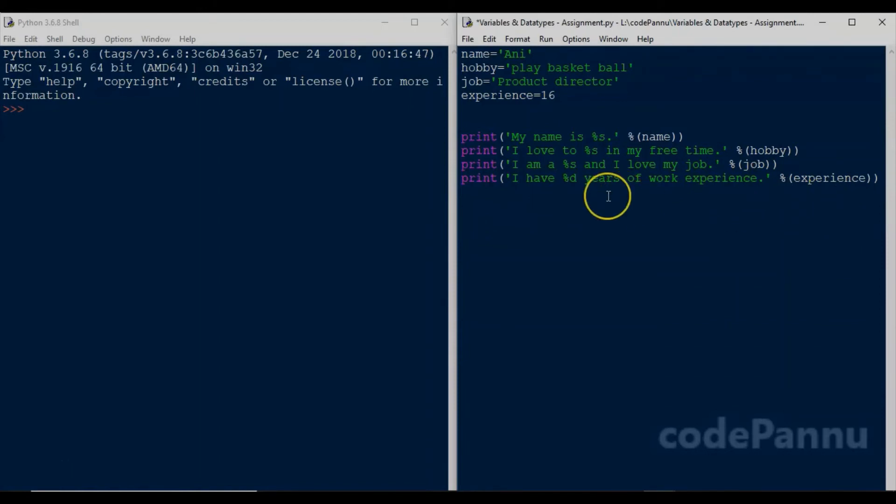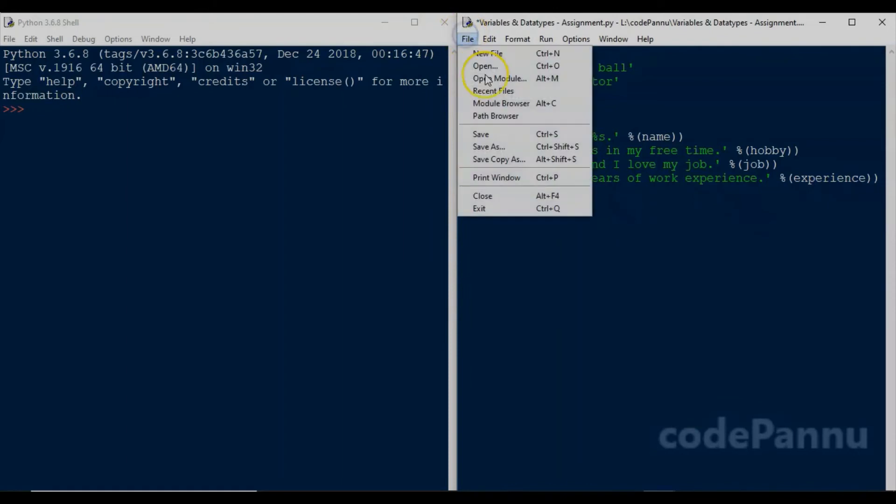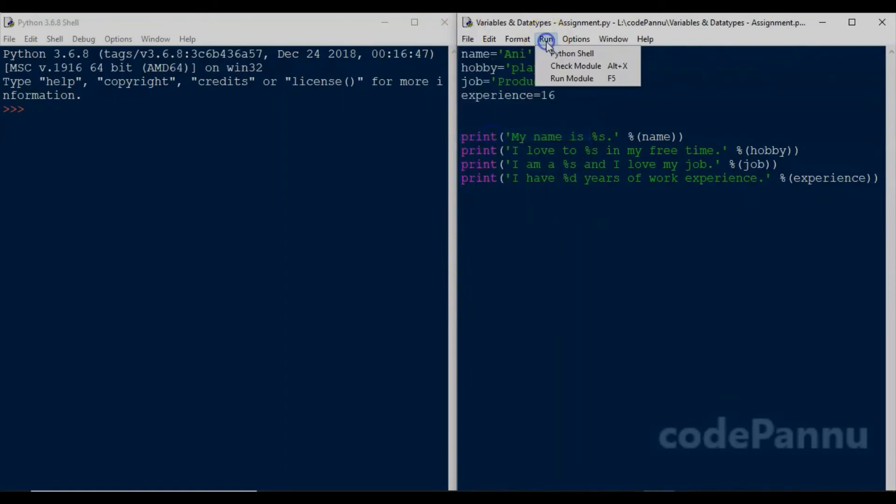If you notice, like how we discussed in our previous video, I have put %s wherever we want to print the values and the variable within the brackets. So the value of these variables will be printed in the place of %s or %d. Let me save the file and run the code.